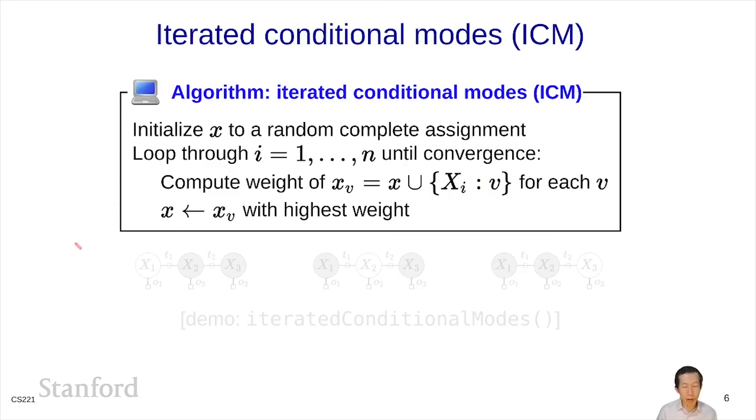Pictorially what this looks like is you start with x1. By convention, unshaded nodes are the ones that are meant to be reassigned and shaded ones are the ones that are fixed. So you pick x1 and say, can I change it to make it better? And then you pick some value of x1. Then you go to x2 and say, can I change x2 to make this assignment better? And then you go to x3. And then you go back to x1 and say, can I make it better by changing x1 again? You keep on going until it converges.